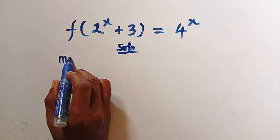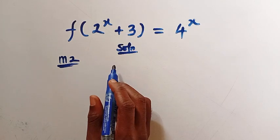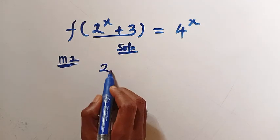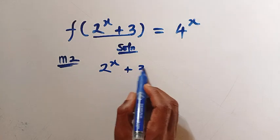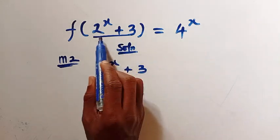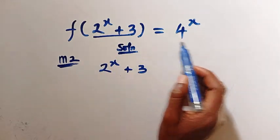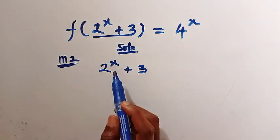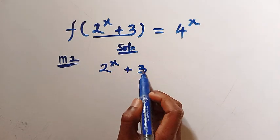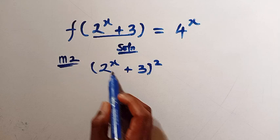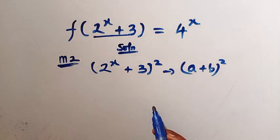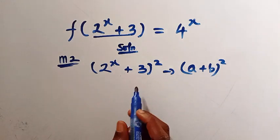In this second method, I'm going to apply some algebraic manipulations. Starting from the domain 2^x + 3, and looking at the other side where we have 4^x — how can we make 4^x share the same domain so we can replace everything with x? It's simple: if I square 2^x + 3, I want to expand this comparing it with (a + b)².